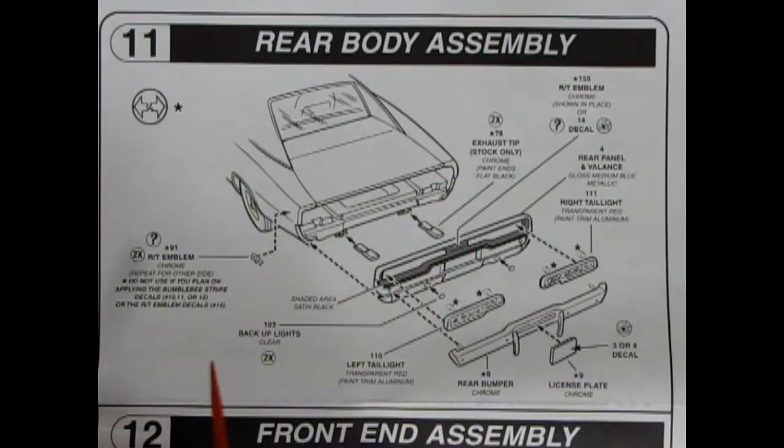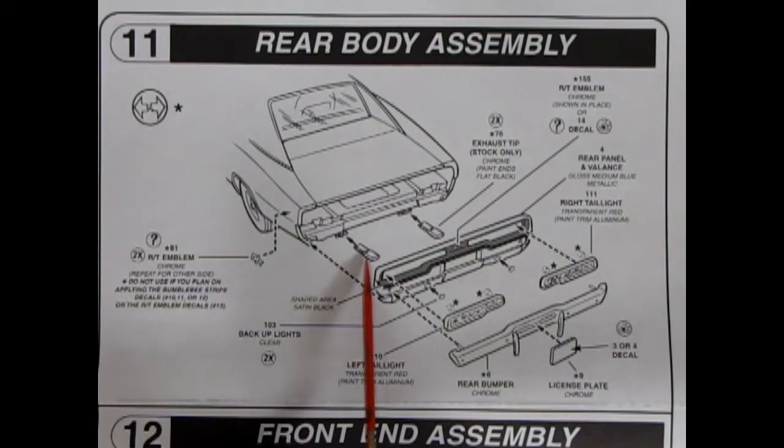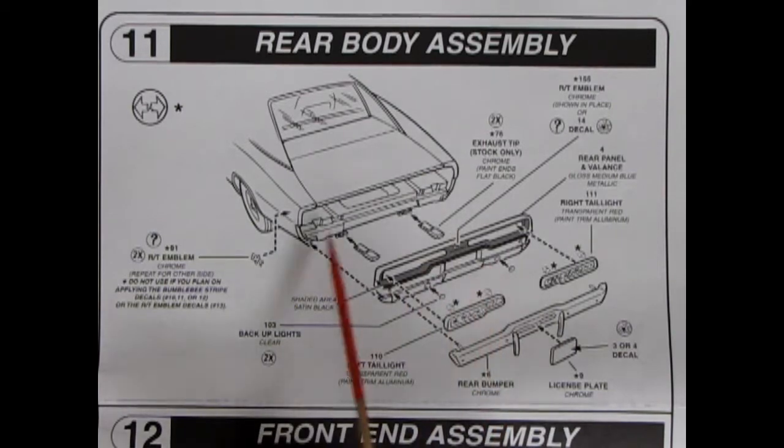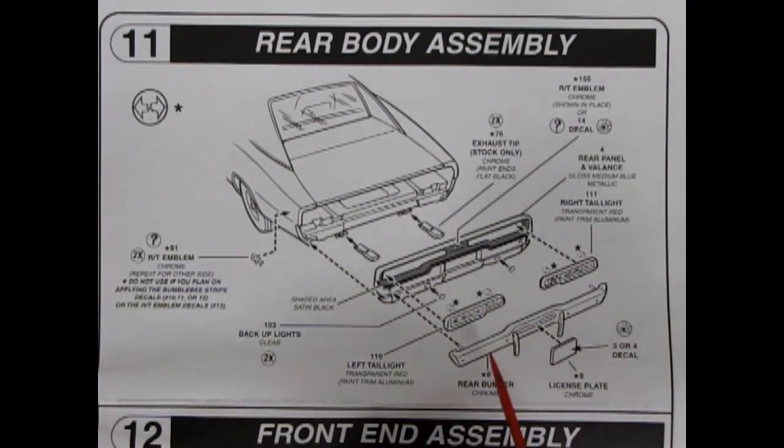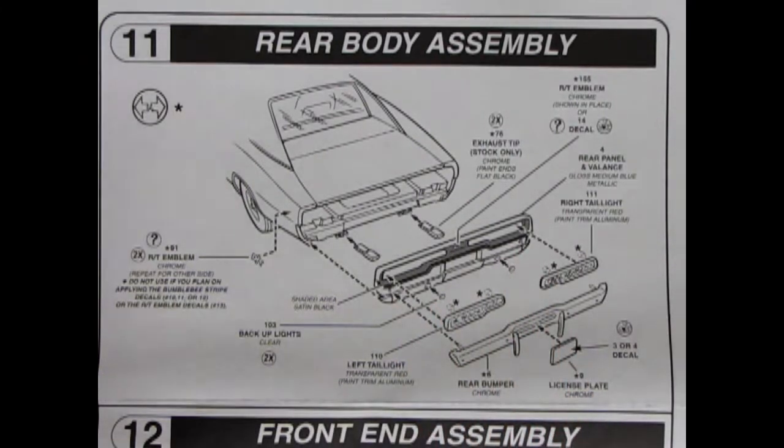Panel 11 shows our rear body assembly and this is where you put your exhaust tips onto the back of those exhaust pipes. The entire back end pops in. This of course is painted flat black or glass black in there. Tail lights popping into there. A little backup lights, the rear bumper and the license plate.